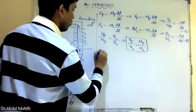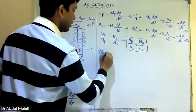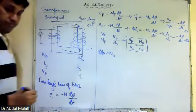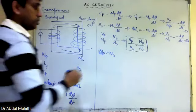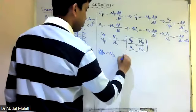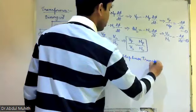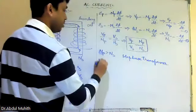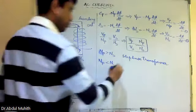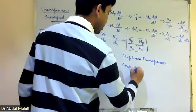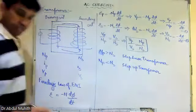If Np is greater than Ns, the transformer is called a step-down transformer. If Np is less than Ns, it is called a step-up transformer. So we have two types: step-down transformer and step-up transformer.